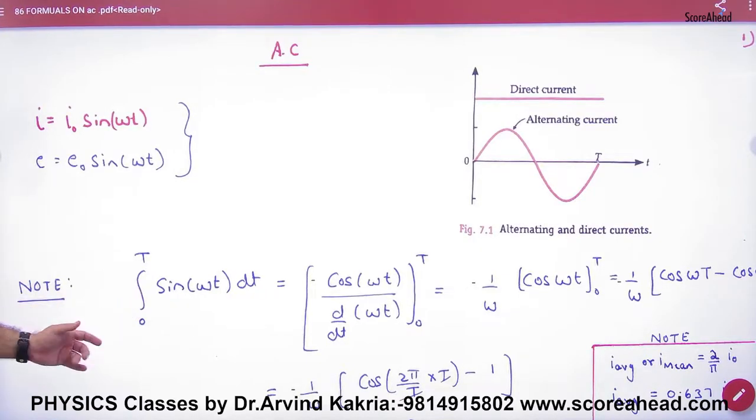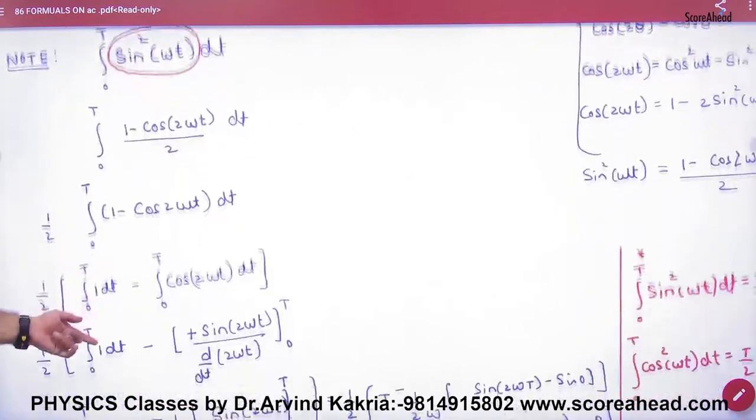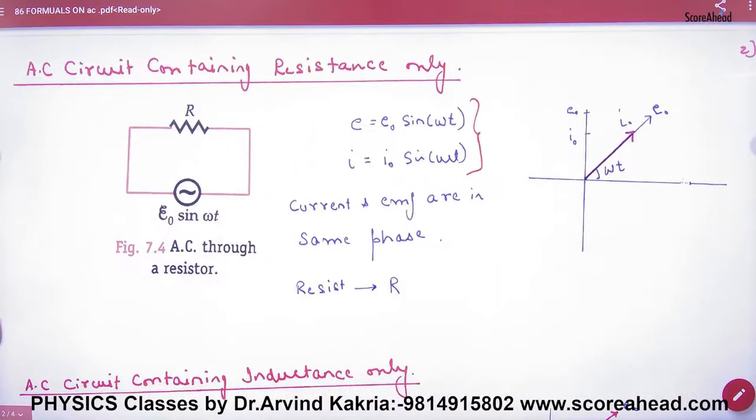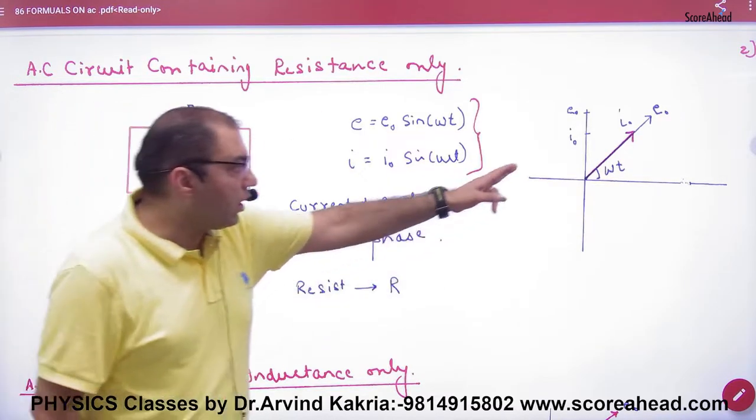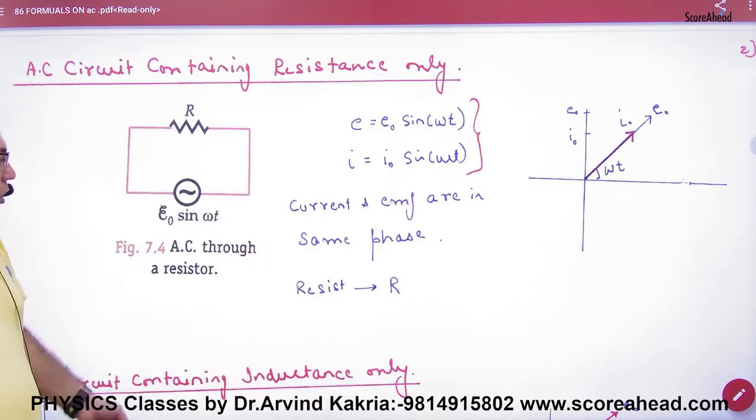We have discussed the average value in AC, so for revision again, there was only resistor in the resistance equation. The current and EMF will remain the same, and the resistance will be R.